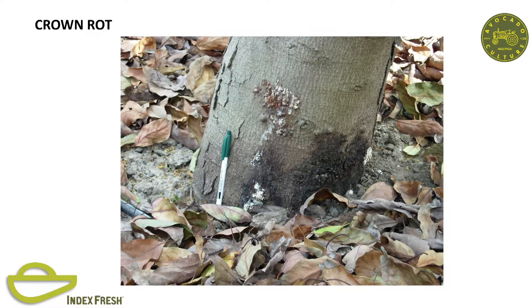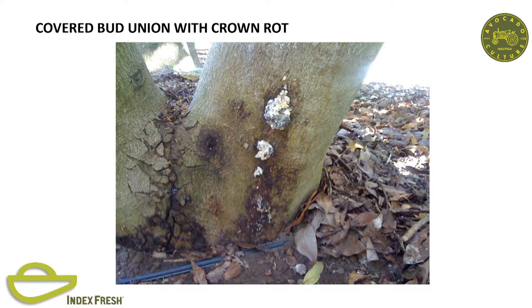An example of crown rot—most likely these bud unions are buried down here somewhere. The resistance of the avocado is below the bud union, so if you have soil and leaves piled up like on a slope, you've just compromised your resistance. After excessive rainfall, you want to be careful to move soil away from the uphill side of your trunks.